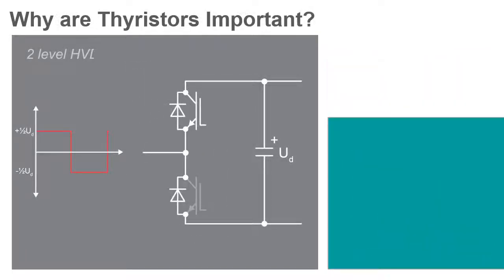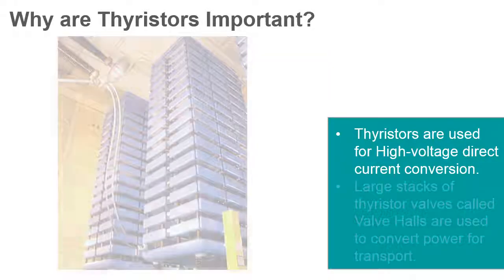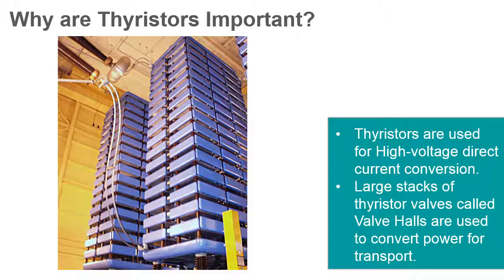Efficient management of electrical power is more important today than ever. Thyristors play a large role in power generation by facilitating high-voltage direct current, or HVDC, conversion. Large stacks of thyristor valves, called valve hulls, contain the valves of the static inverters that are used to convert direct current generated by the power station into alternating current for long-distance transport.